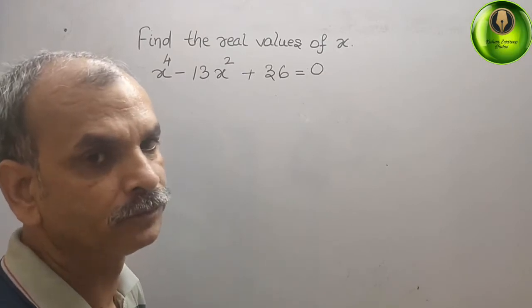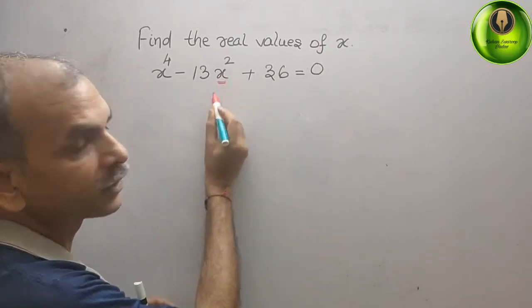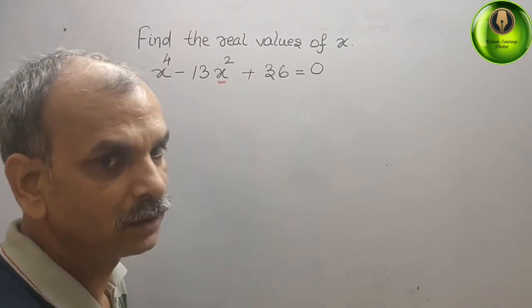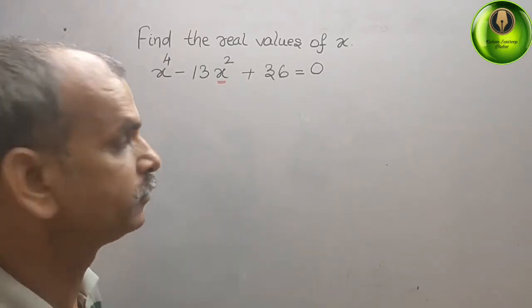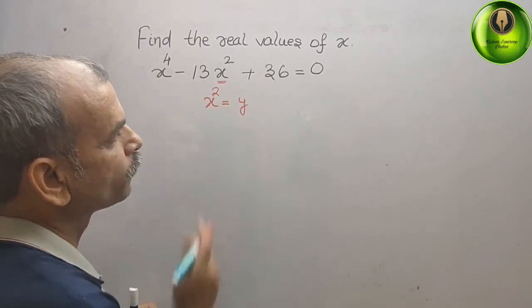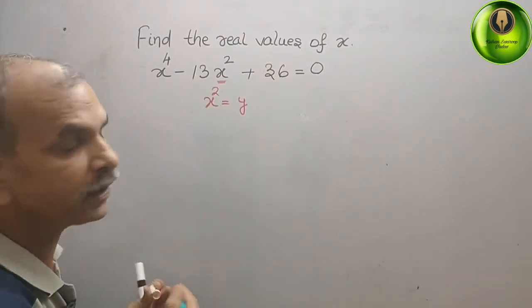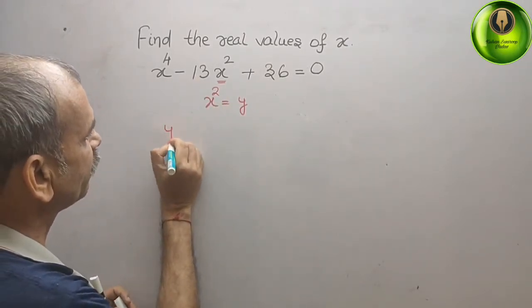Just we will take the smallest, that is x square, that is equal to y. x square is equal to y. Now your equation gets changed. What is that? You will get here y square...